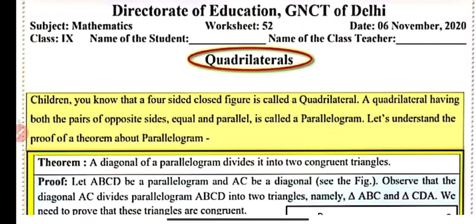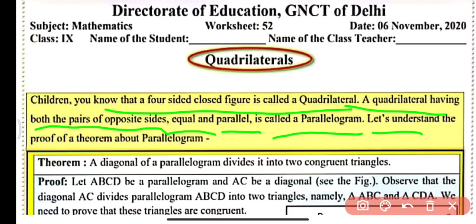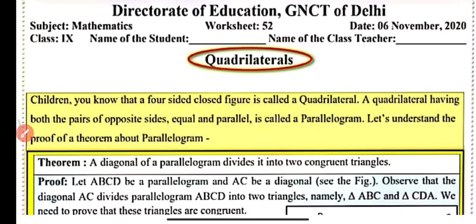A four-sided closed figure is called a quadrilateral. A quadrilateral having both pairs of opposite sides equal and parallel is called a parallelogram. Let's understand the proof of a theorem about parallelogram.